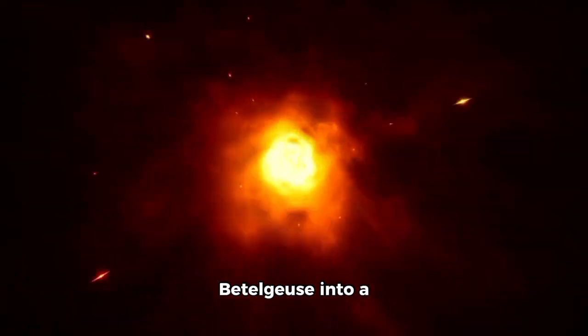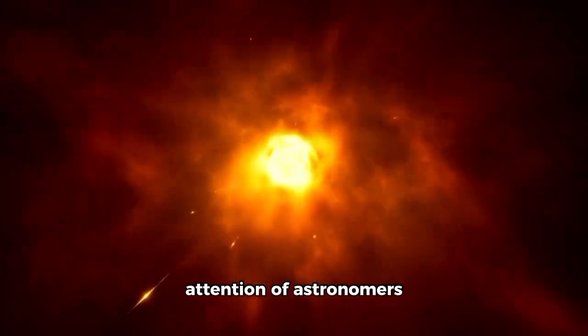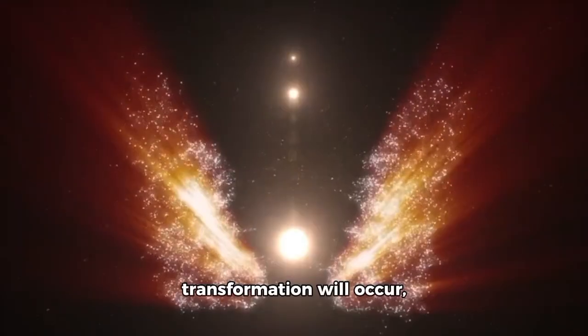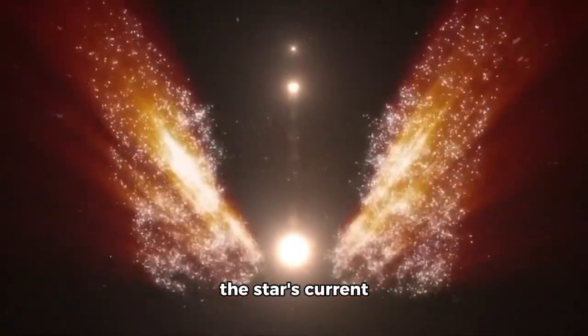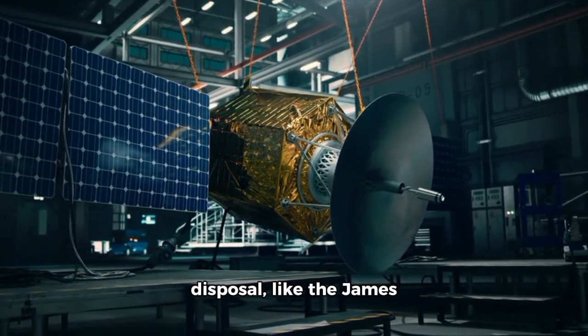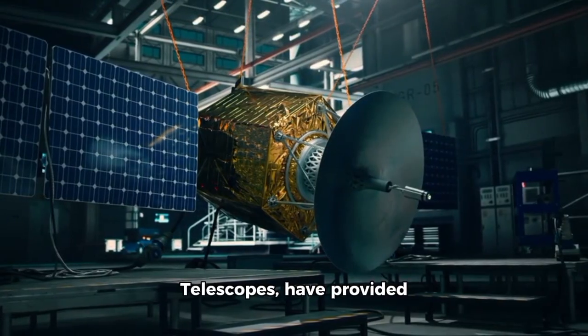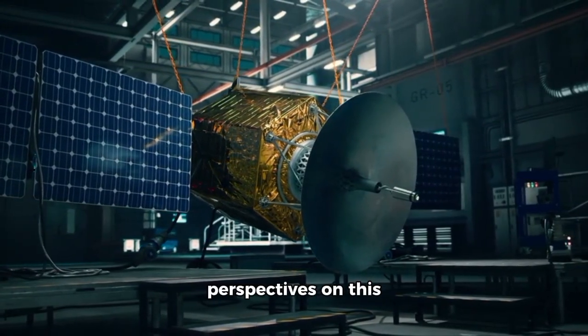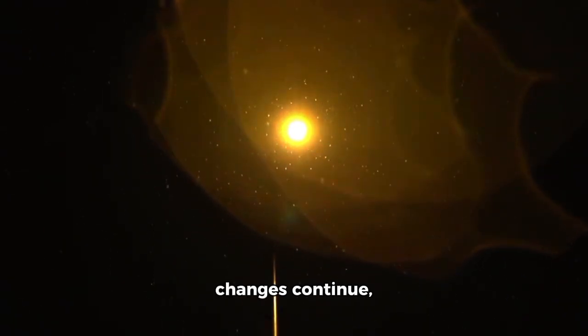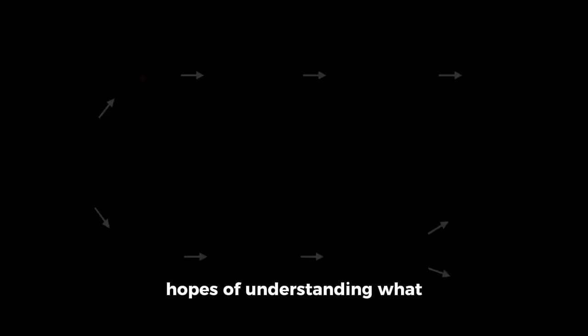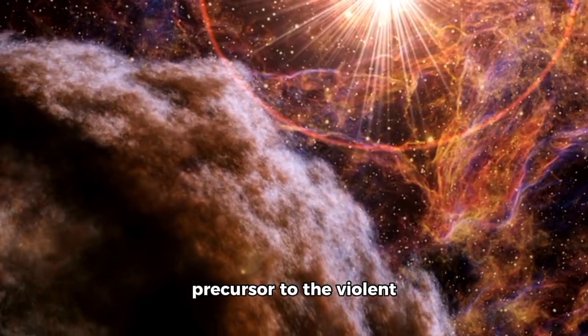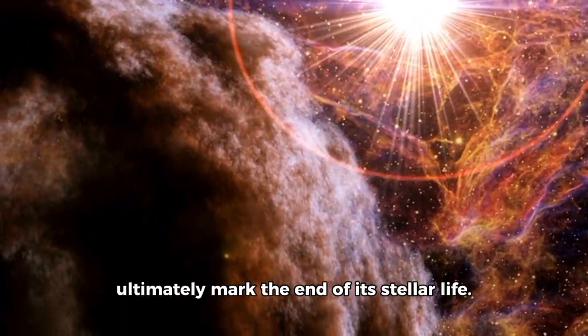The evolution of Betelgeuse into a supernova is an event that will capture the attention of astronomers and sky watchers alike. Even though we are unsure when exactly this transformation will occur, the star's current instability has sparked a wave of speculation about its future. The advanced instruments and technologies at our disposal, like the James Webb and Hubble Space Telescopes, have provided astronomers with new perspectives on this extraordinary star. As Betelgeuse's brightness fluctuates and its erratic changes continue, scientists are meticulously studying the data in the hopes of understanding what triggers these shifts. The star's extreme variability could be a precursor to the violent explosion that will ultimately mark the end of its stellar life.